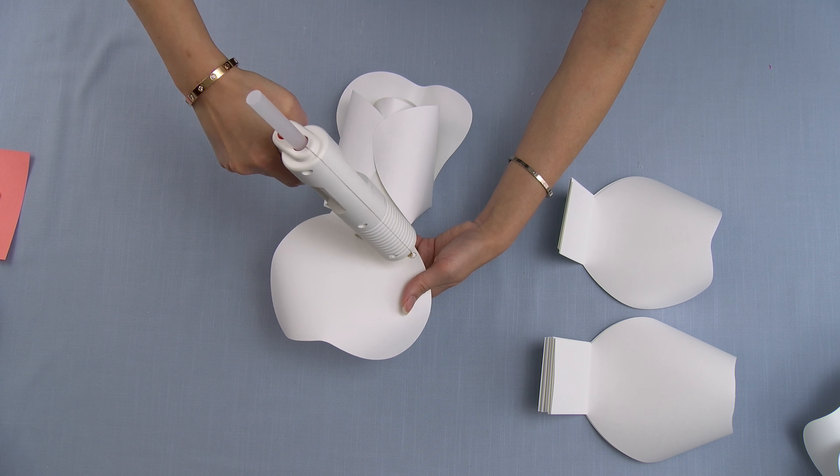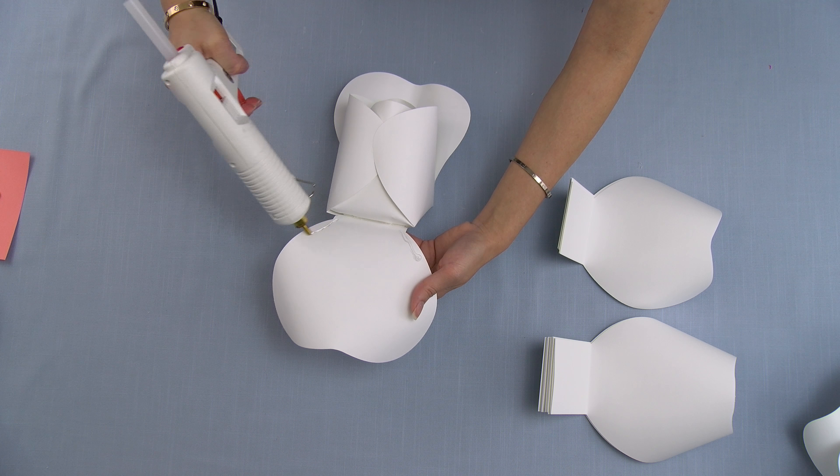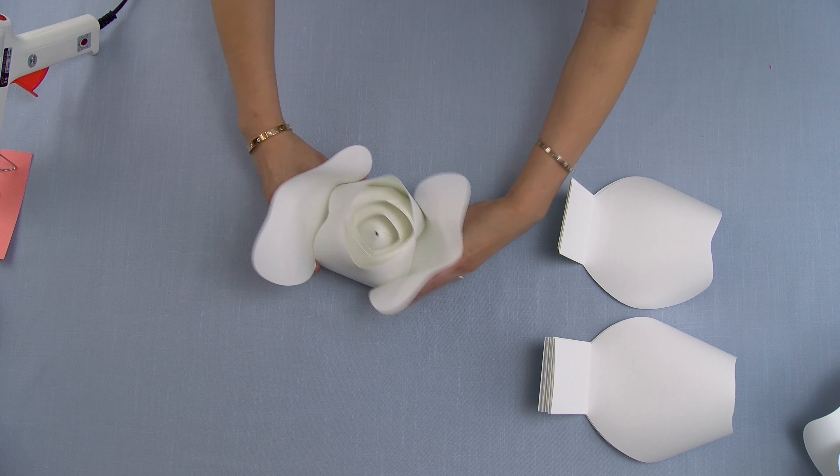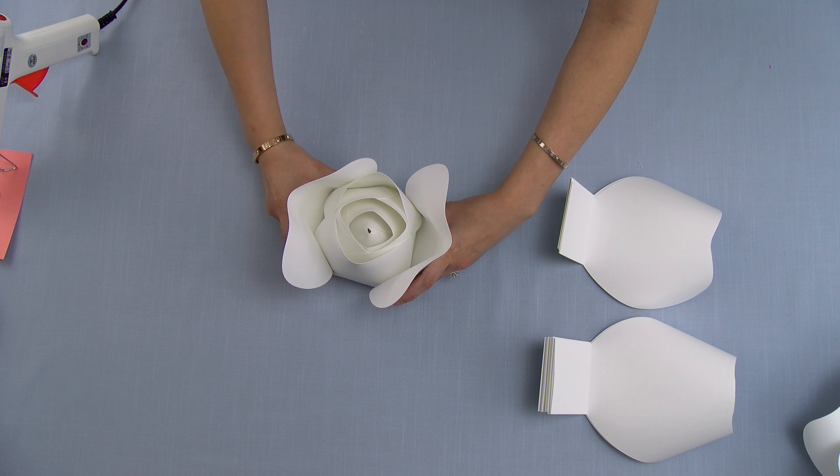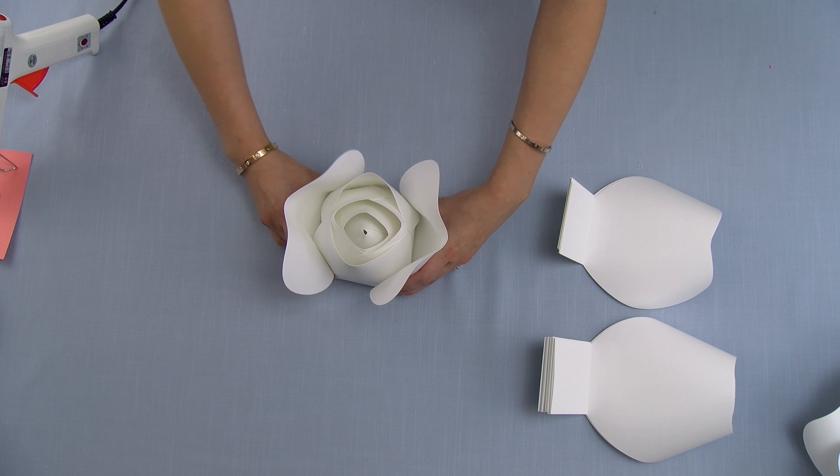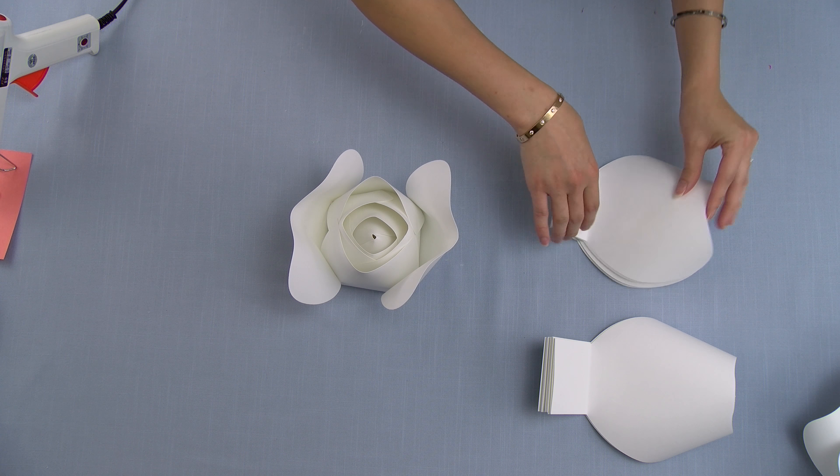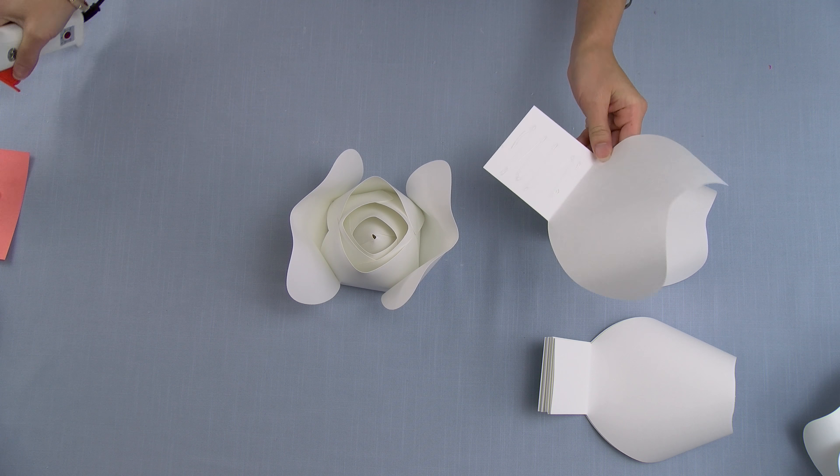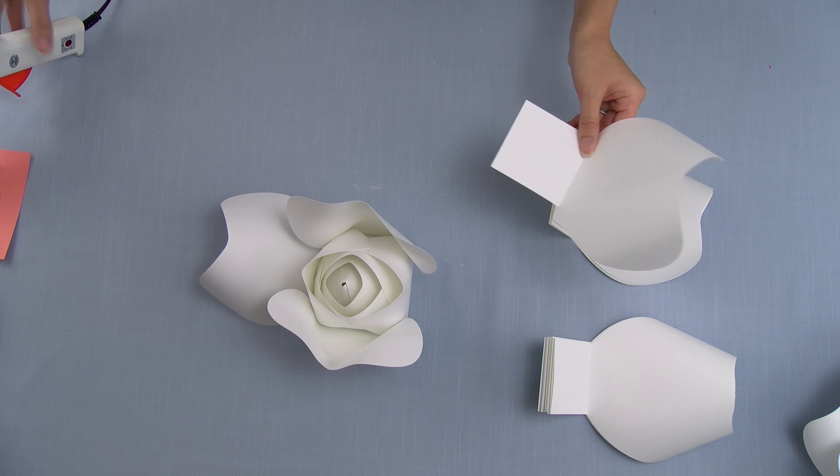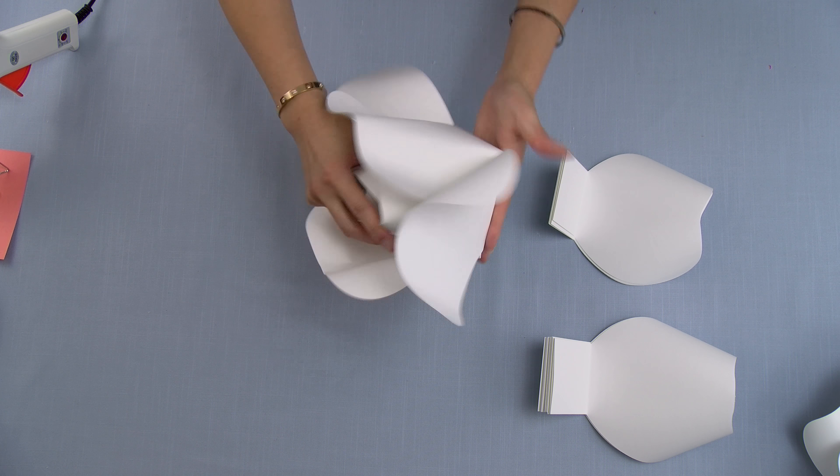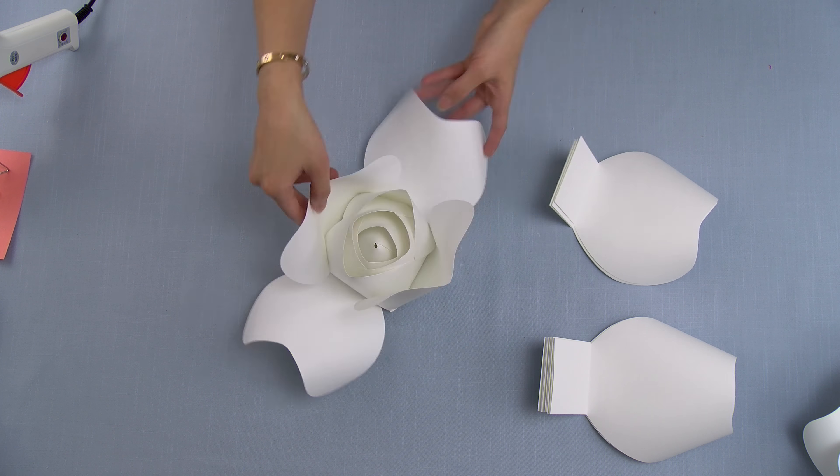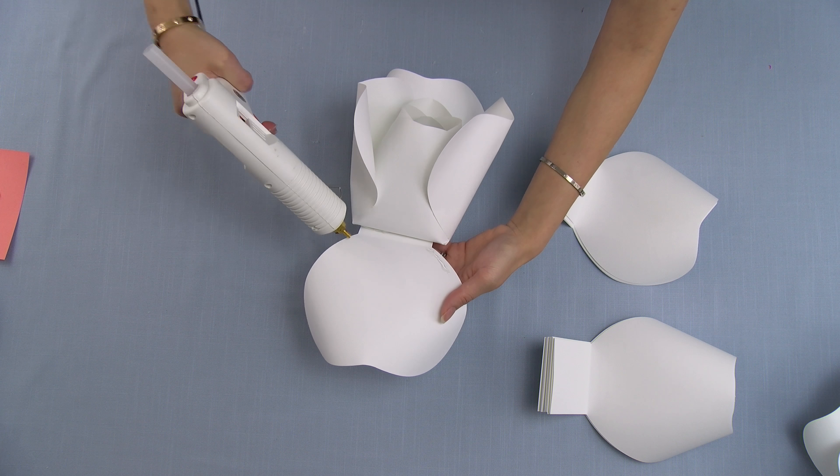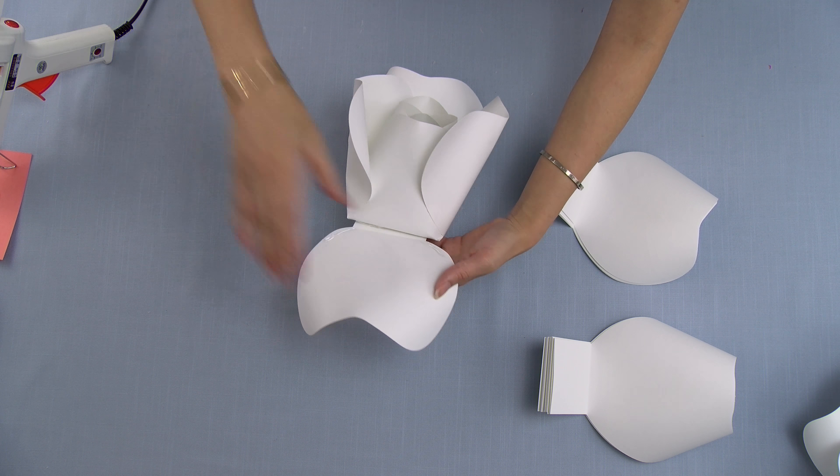I'm going to repeat the same steps for the next side. Now I'm going to glue on the next two pieces, and then once again I'm going to glue the bottom and then pinch it upwards to the bud.